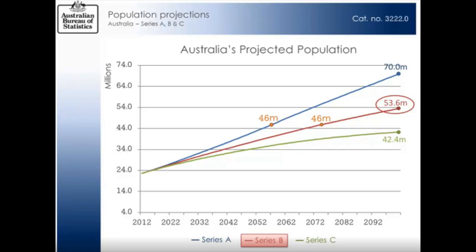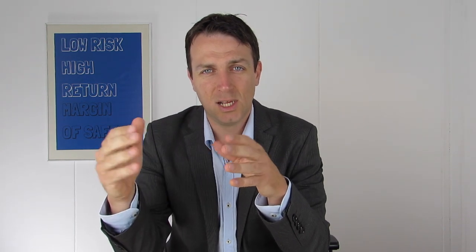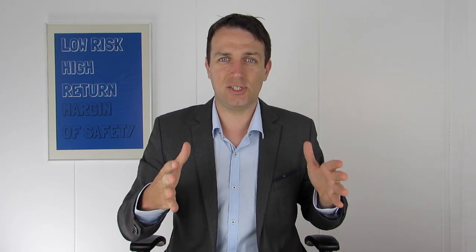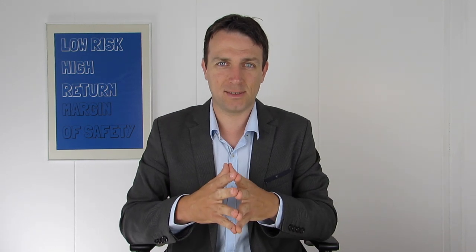Let me start with the Australian population. Europe is not growing, so I want to invest in countries that have a positive demographic trend. The Australian Bureau of Statistics made a forecast with the best case scenario, the worst case scenario, and the probable case scenario. The population in Australia is projected to double by 2075, which implies a growth rate of 1%. Demographics are very important for long-term investors because you want to be exposed to positive trends. A population increase of just 1% per year over 10-20 years increases GDP by at least 20%, and that's very important.